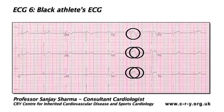In the absence of symptoms, this particular ECG abnormality does not require further investigation. However, even in a Black athlete, the presence of ST segment depression, pathological Q-waves, or deep T-wave inversions in leads V4 to V6 should result in detailed assessment for an underlying cardiomyopathy.